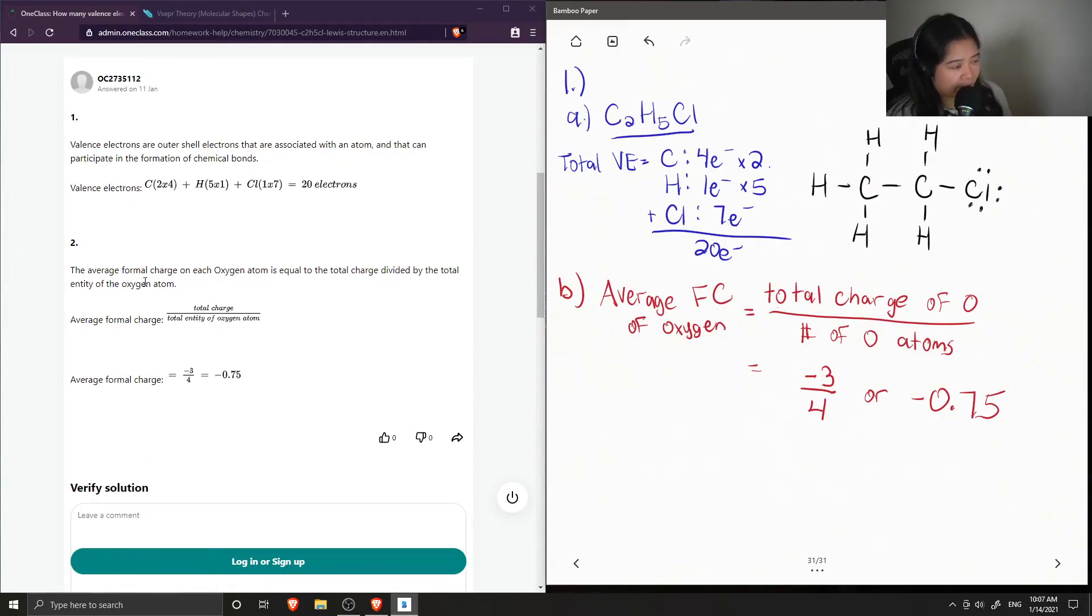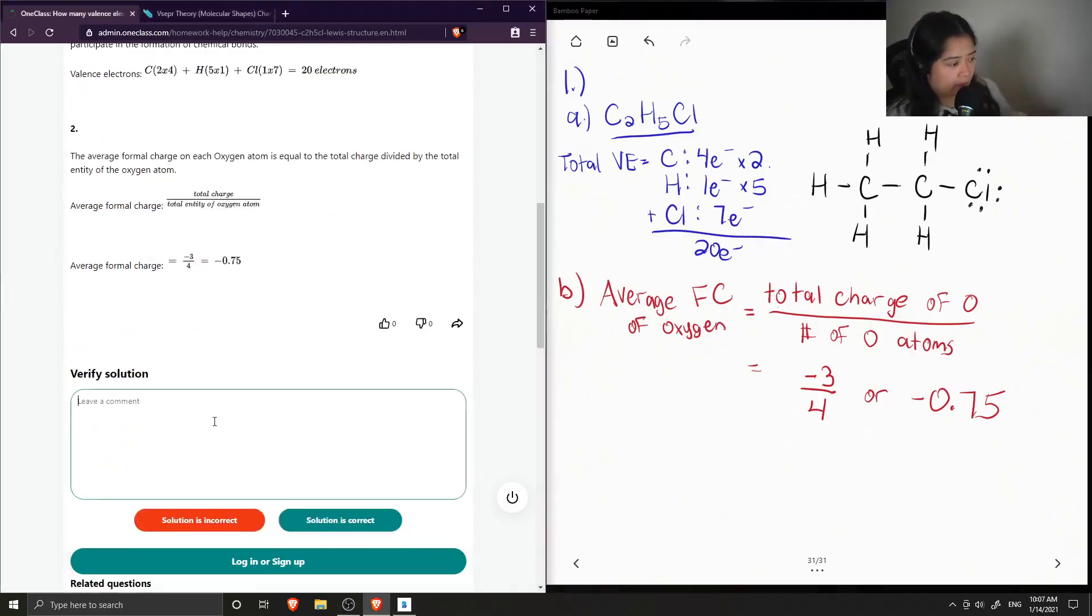And for part two, the average formal charge on each oxygen atom is equal to the total charge divided by the total number of oxygen atoms in the compound. And they also got negative 0.75. So this solution is correct.